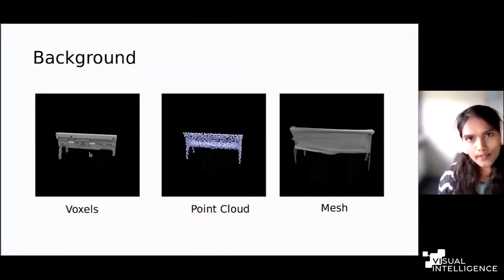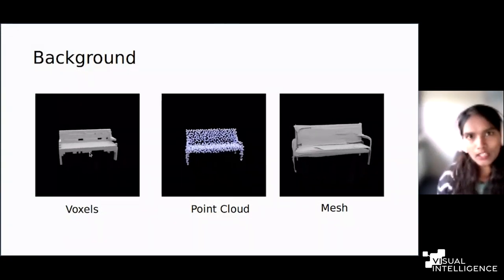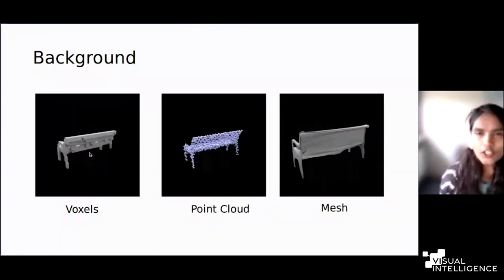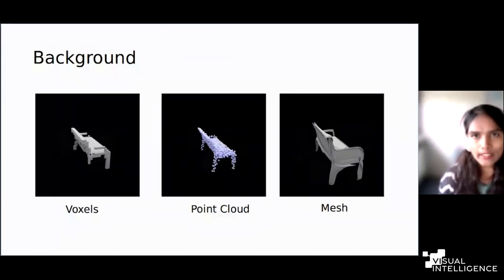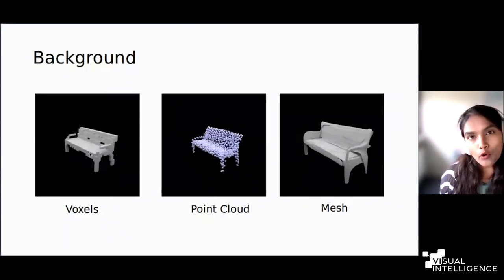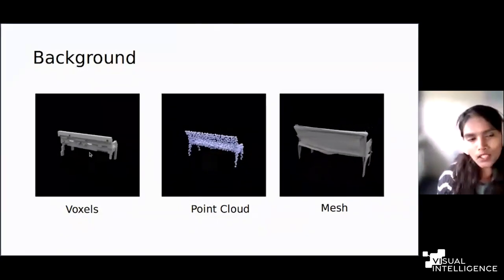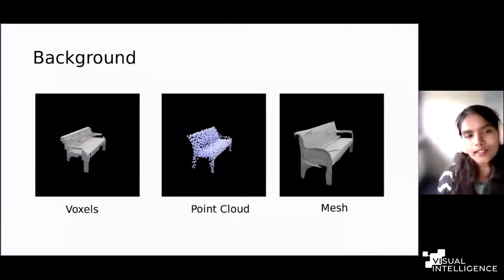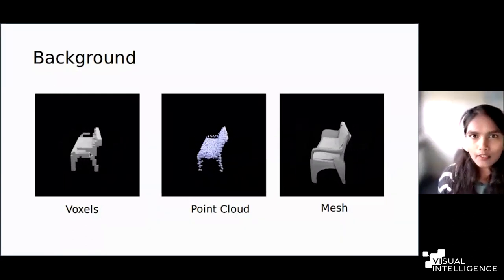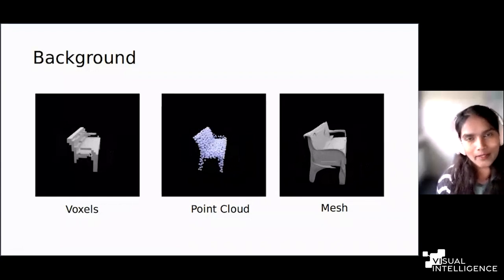The first available data representation is voxels. Voxels are pretty similar to pixels in 2D space — in 3D we have this cuboid unit which represents the occupancy of a particular 3D shape, whether the geometry is present or not, using a voxel representation. They are compatible with deep learning and deep convolutional networks. The major disadvantage is that the shape is quite restricted by the resolution of these voxels. You can represent fine-grained structures by going to higher resolution, but this further increases the computational cost in processing.